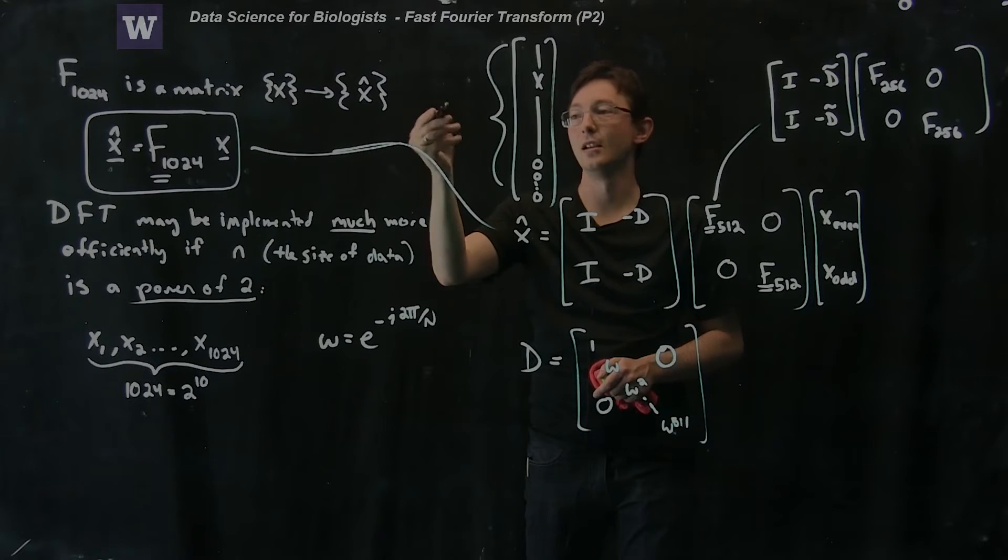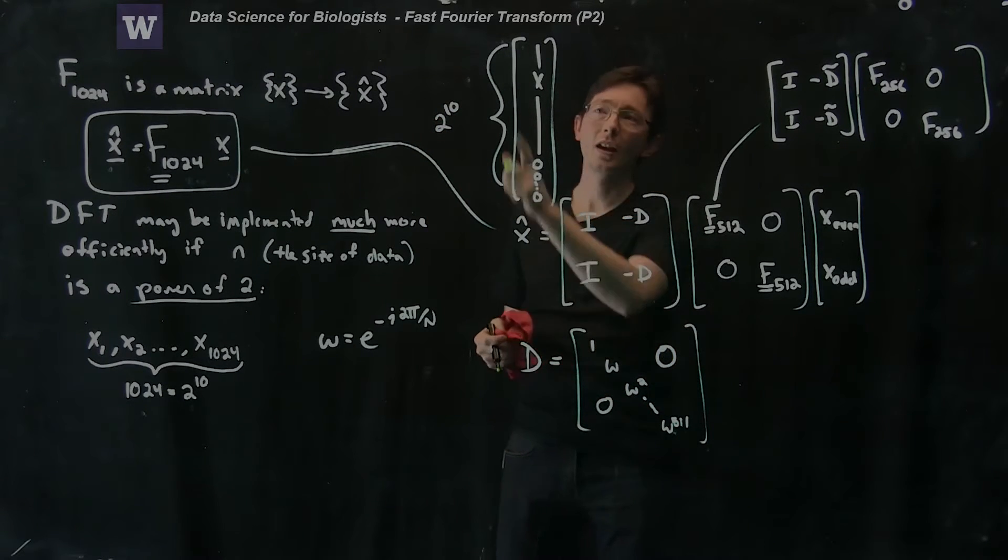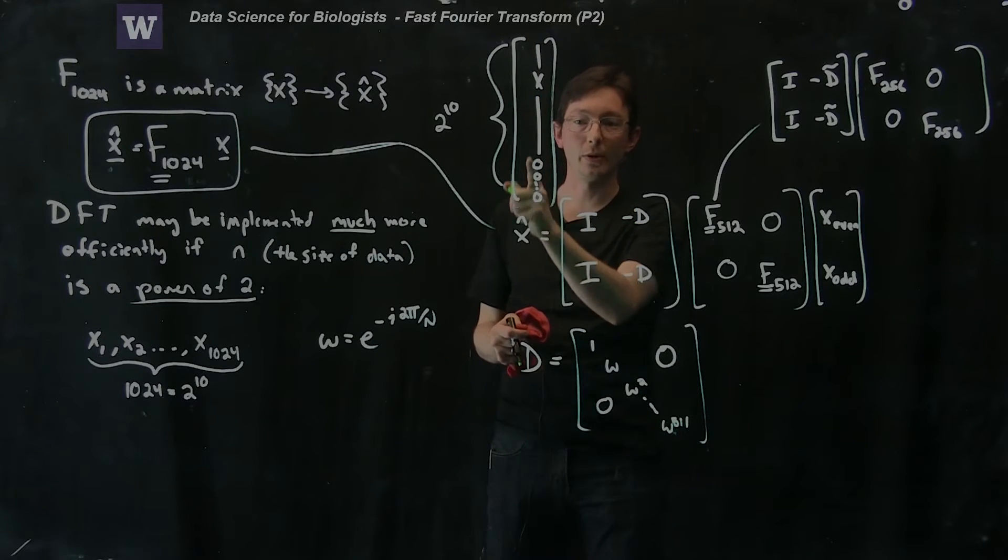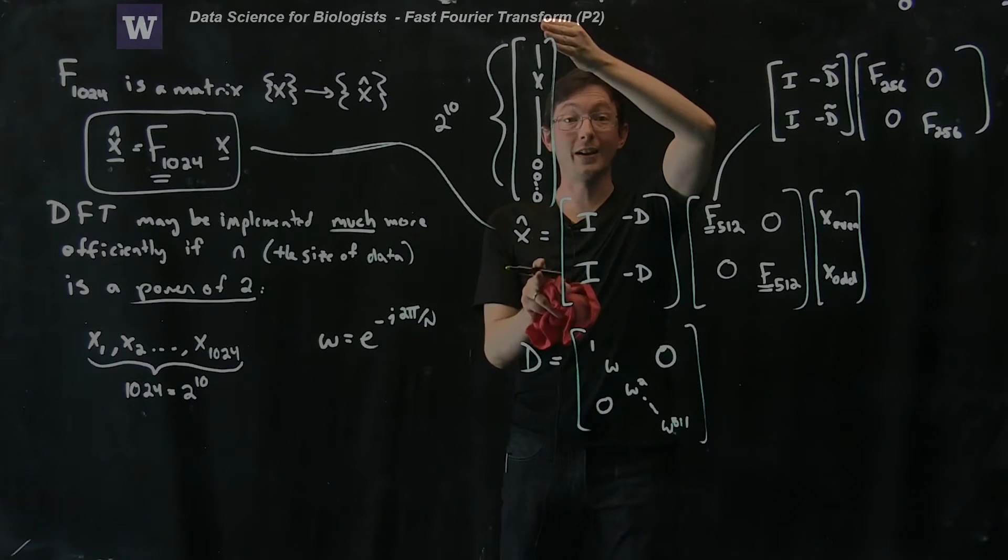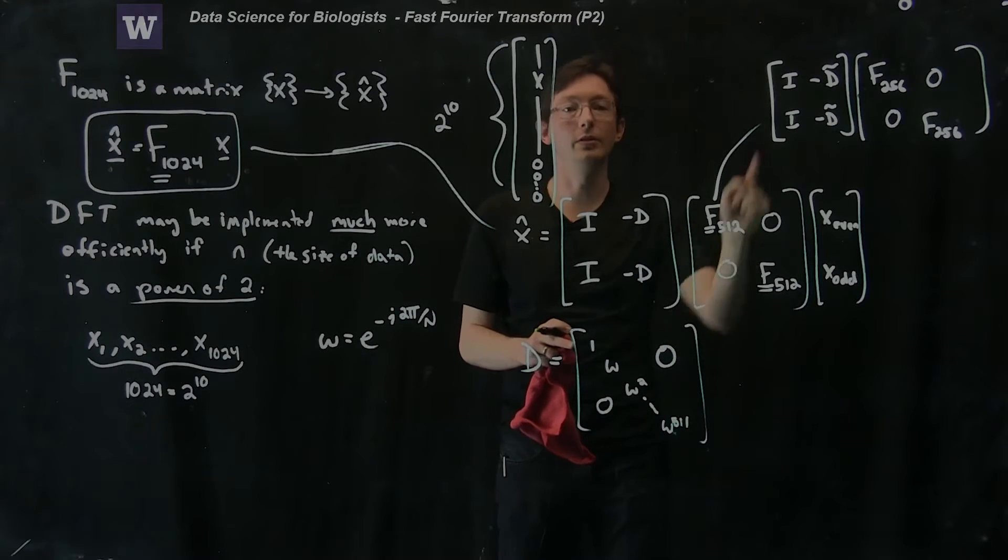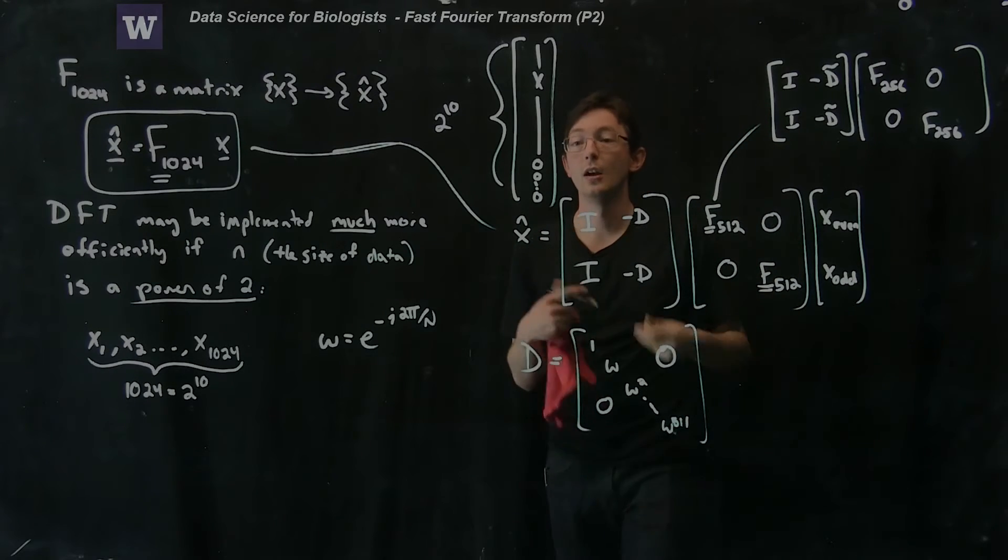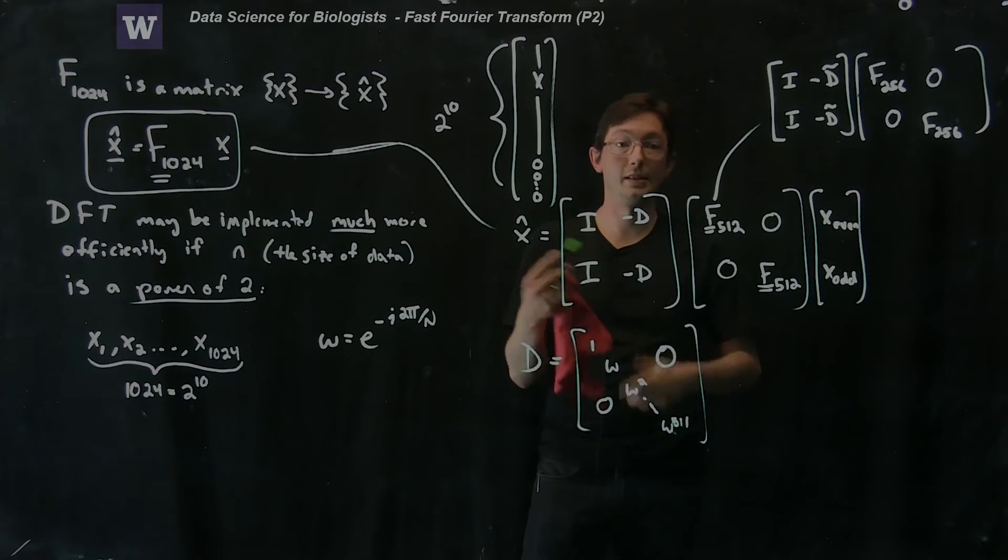So this will be 2 to the 10, the nearest power of 2. And it turns out that it's still cheaper to actually make your data vector bigger to the next power of 2 as long as you can use this decomposition trick, this fast Fourier transform trick. And that's what computers do to this day.